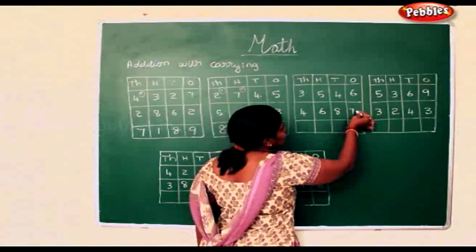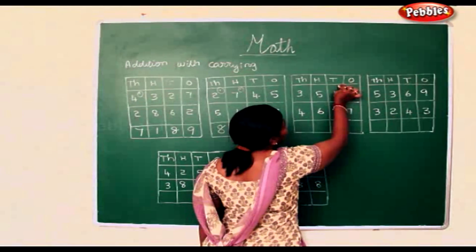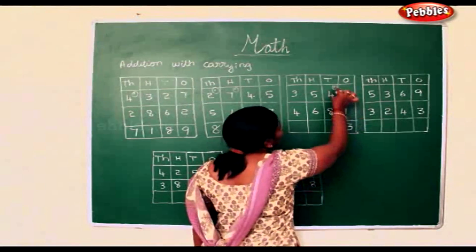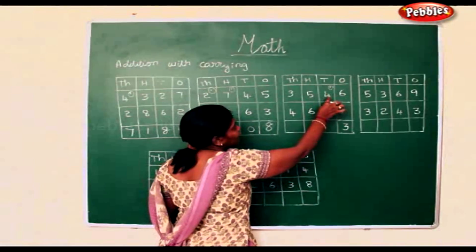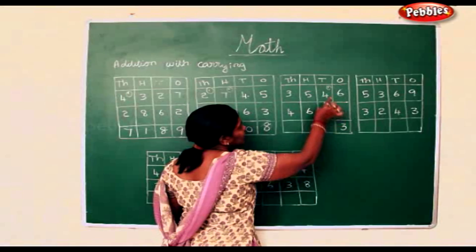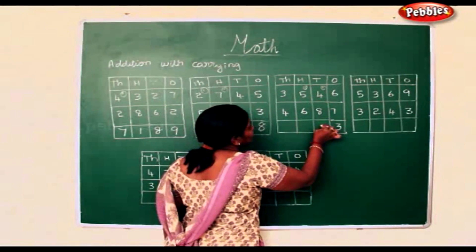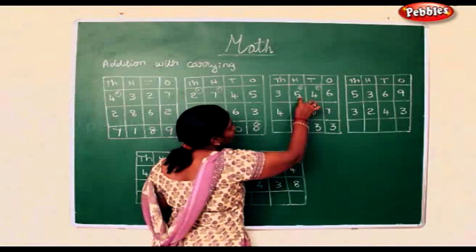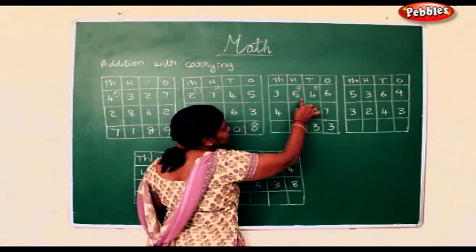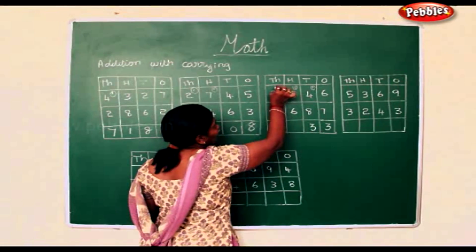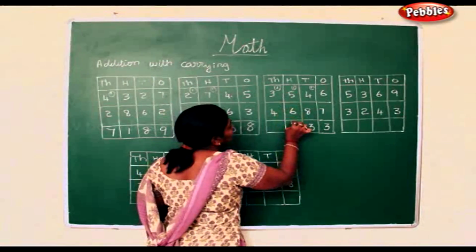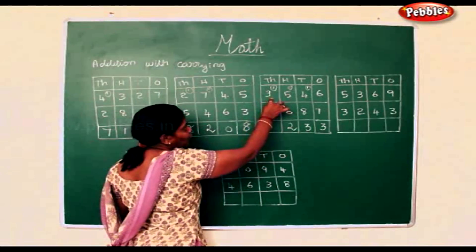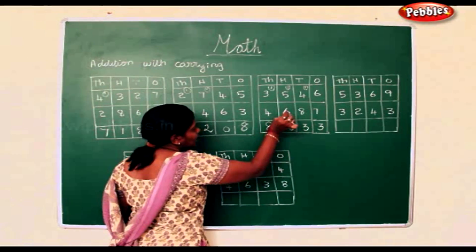6 add 7 is 13. 1 add 4 is 5. 5 add 8 is again 13. 1 add 5 is 6. 6 add 6 is 12. 1 add 3 is 4. 4 add 4 is 8.